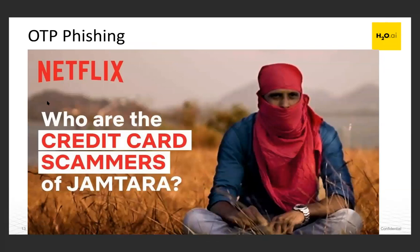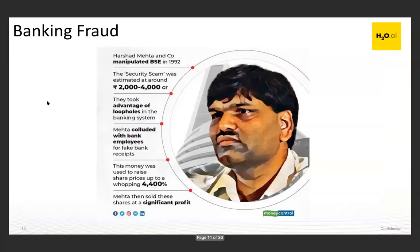Coming back to India: there's a real story from a small village called Jamtara where people grouped together to do OTP phishing. They target mostly senior citizens and vulnerable populations, posing as bank or credit card representatives to extract OTPs and steal money. Another example is the Harshad Mehta scam of 1992, estimated at 4,000 crores — worth around 20,000 crores today — involving collusion between banks and Harshad Mehta to issue fake bank receipts and manipulate the stock market.